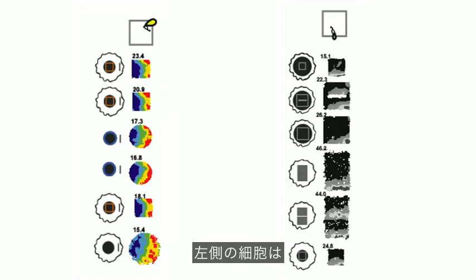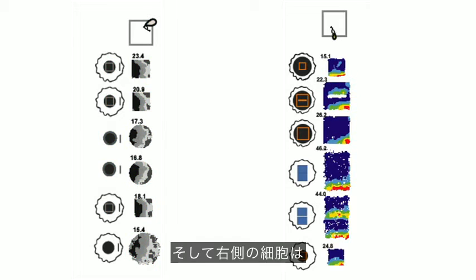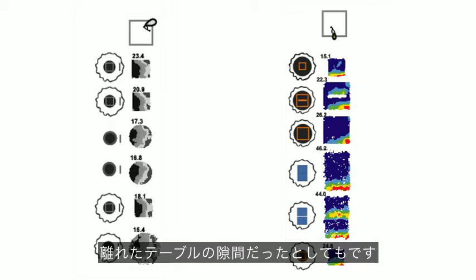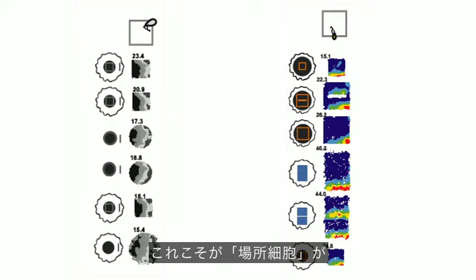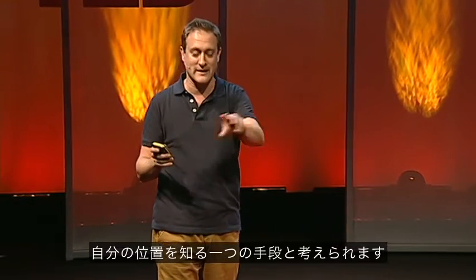So the cell on the left, you can see, it fires whenever the animal gets near to a wall or a boundary to the east, whether it's the edge or the wall of a square box or the circular wall of a circular box or even the drop at the edge of a table which the animals are running around. And the cell on the right there fires whenever there's a boundary to the south, whether it's the drop at the edge of the table or a wall or even the gap between two tables that are pulled apart. So that's one way in which we think place cells determine where the animal is as it's exploring around.